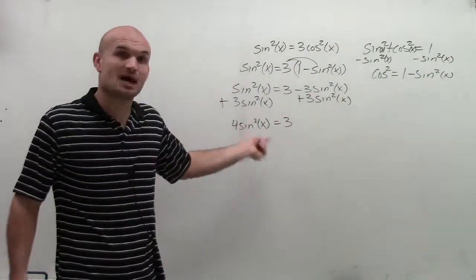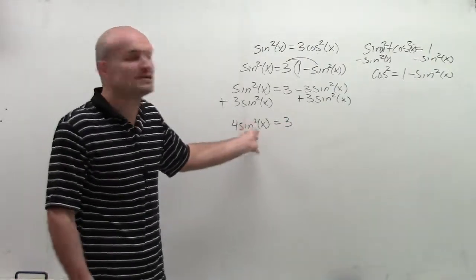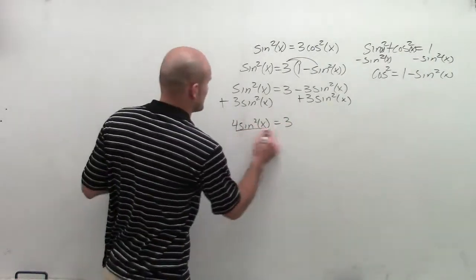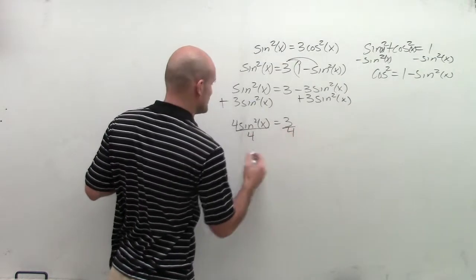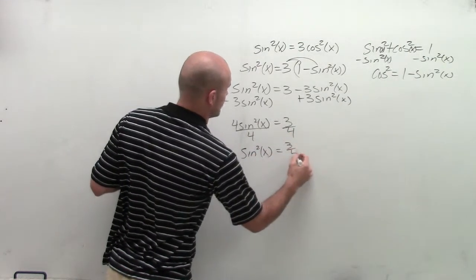Now I have my variable that's isolated, and it's equal to a value. So all I need to do is undo still what's happening to my variable. So I'm going to divide by 4 on both sides. So I get sine squared of x equals 3 over 4.